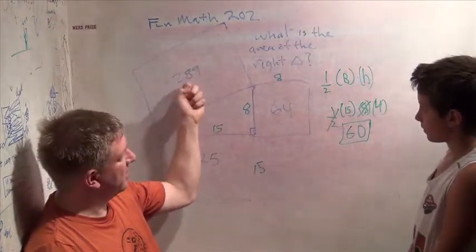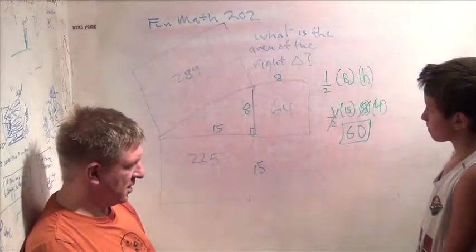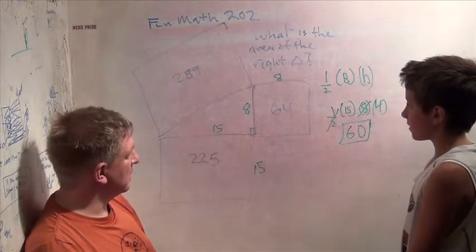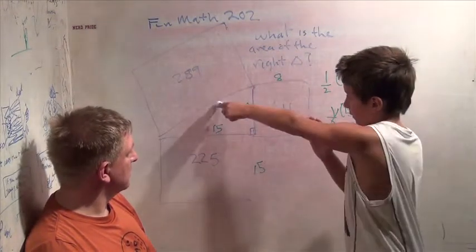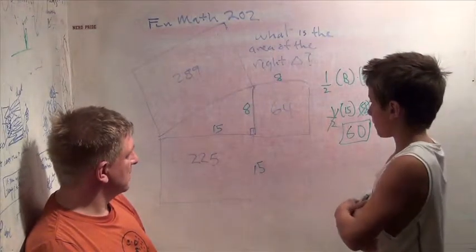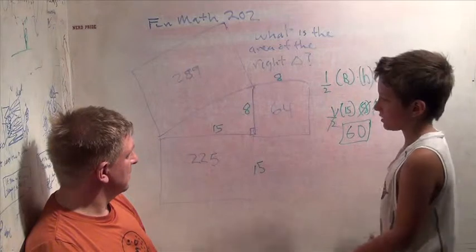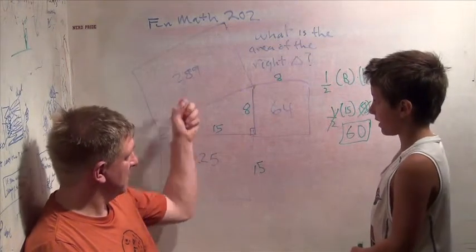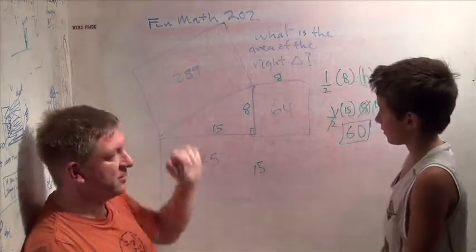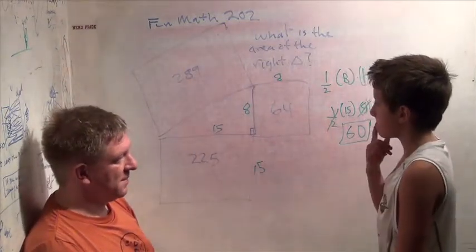As an extra challenge, can you figure out what number squared is 289? We can use the Pythagorean theorem to figure out the side length. Yeah. So 225 plus 64 is 289. Just so the Pythagorean theorem works, we just have to figure out what the square root of 289 is.